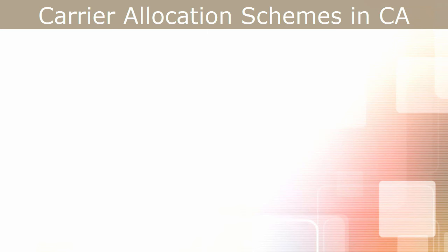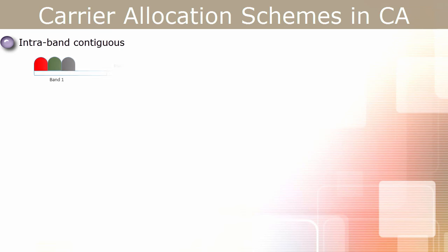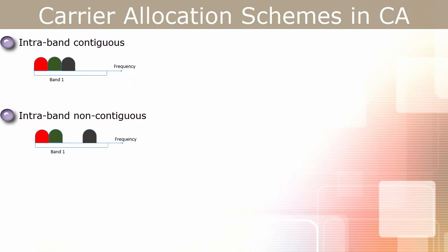There are mainly three ways in which CA carriers can be allocated. First, intraband contiguous: in this scheme, the primary component carrier and secondary component carriers are contiguous and belong to the same band. As spectrum allocation to operators is not always uniform, it is not always possible to have this scheme. Second, intraband non-contiguous: in this scheme, the primary and secondary component carriers are allocated from the same band, but they are non-contiguous.